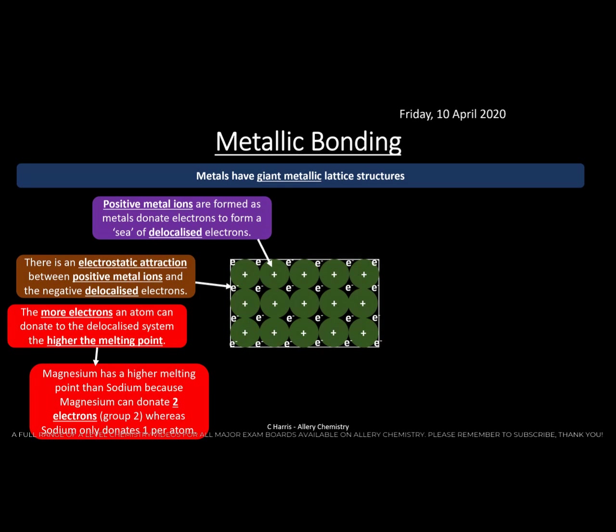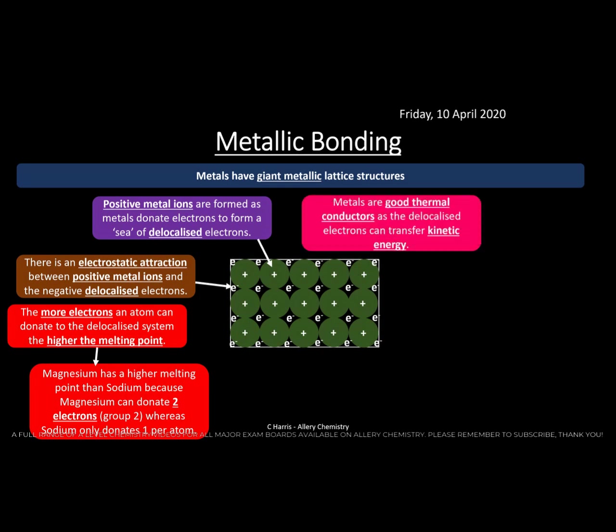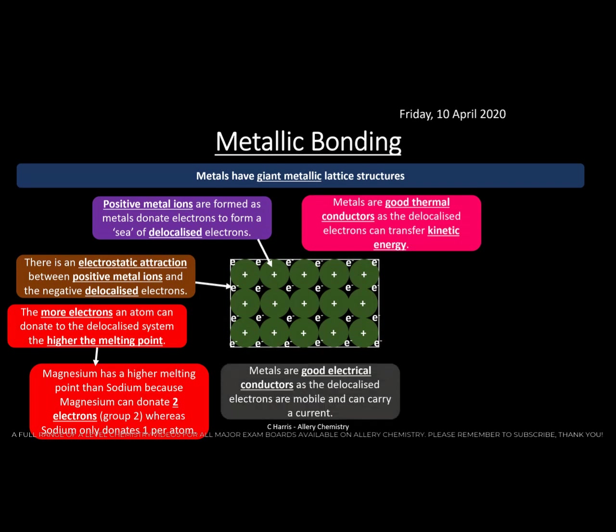Magnesium ribbon is quite a strong metal but you can tear it with your hands, whereas sodium is like cheese — very soft. Never touch sodium with your hands as it reacts vigorously with water. Metals are good thermal conductors because delocalized electrons can transfer kinetic energy. Metals are also good electrical conductors because of the free-moving delocalized electrons that can carry a current.